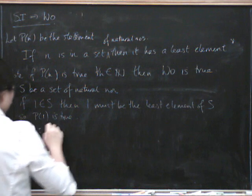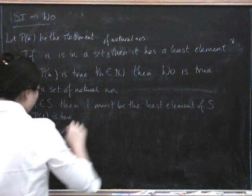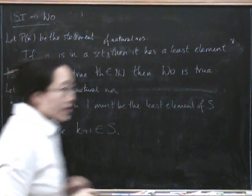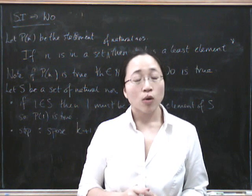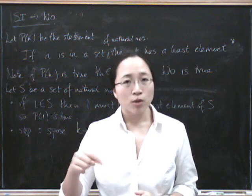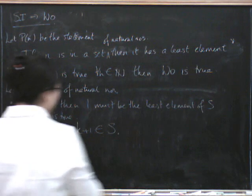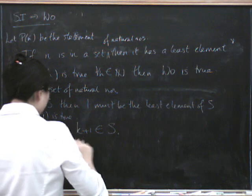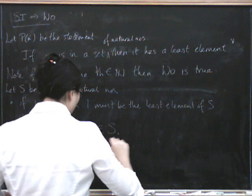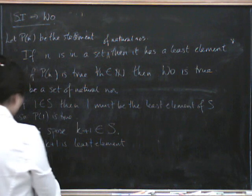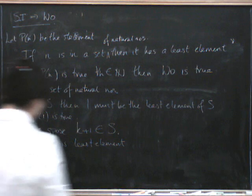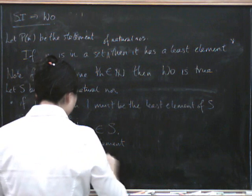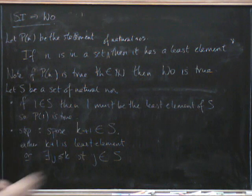Suppose that k+1 is in the set. Well, either k+1 is the least element of the set, or something smaller than that is in the set. So either k+1 is the least element, or it isn't the least element, in which case there exists some j less than or equal to k such that j is in the set.